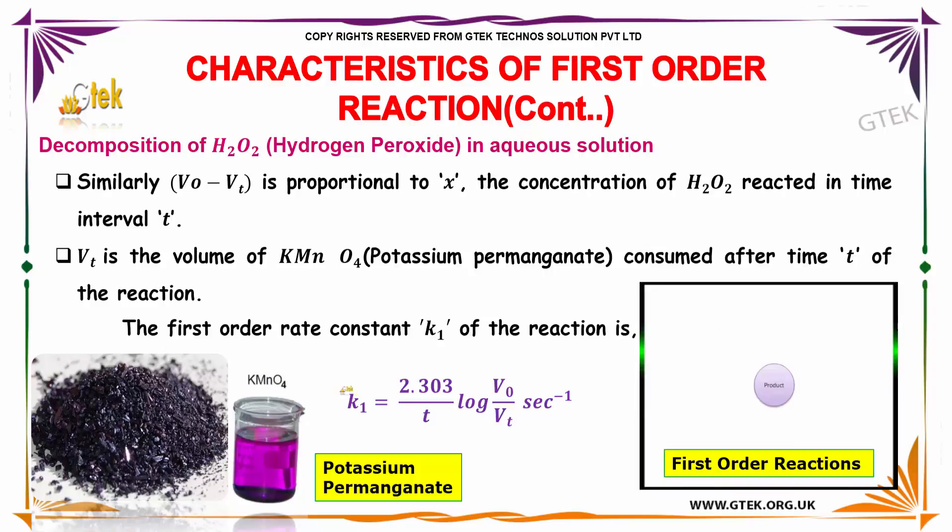The first-order rate constant K1 equals 2.303 divided by t, log V0 by Vt, per second.